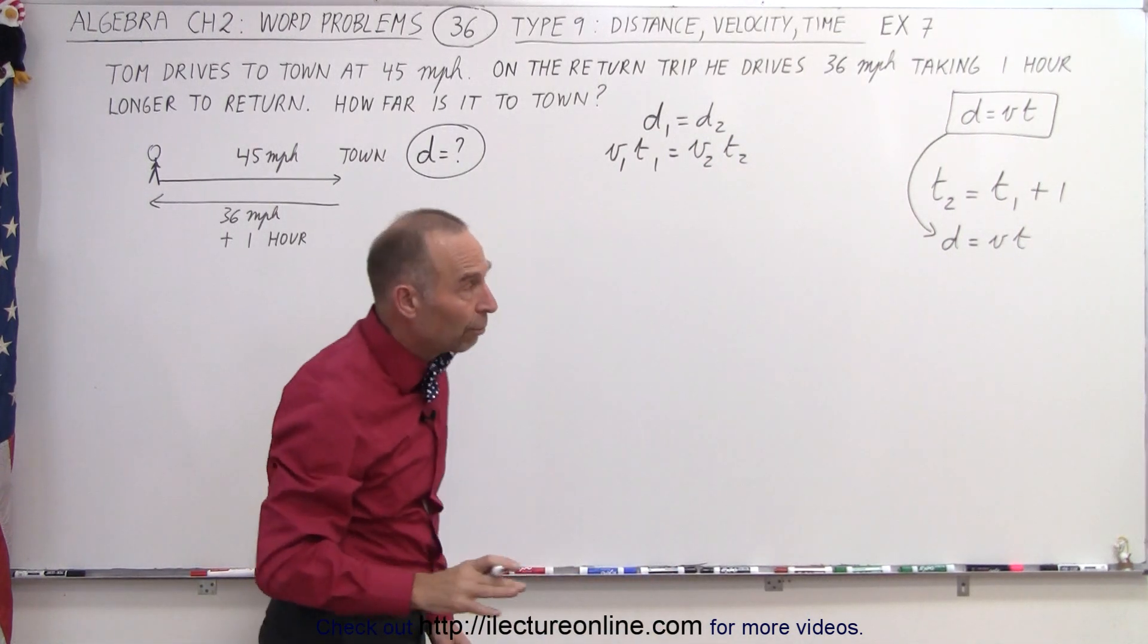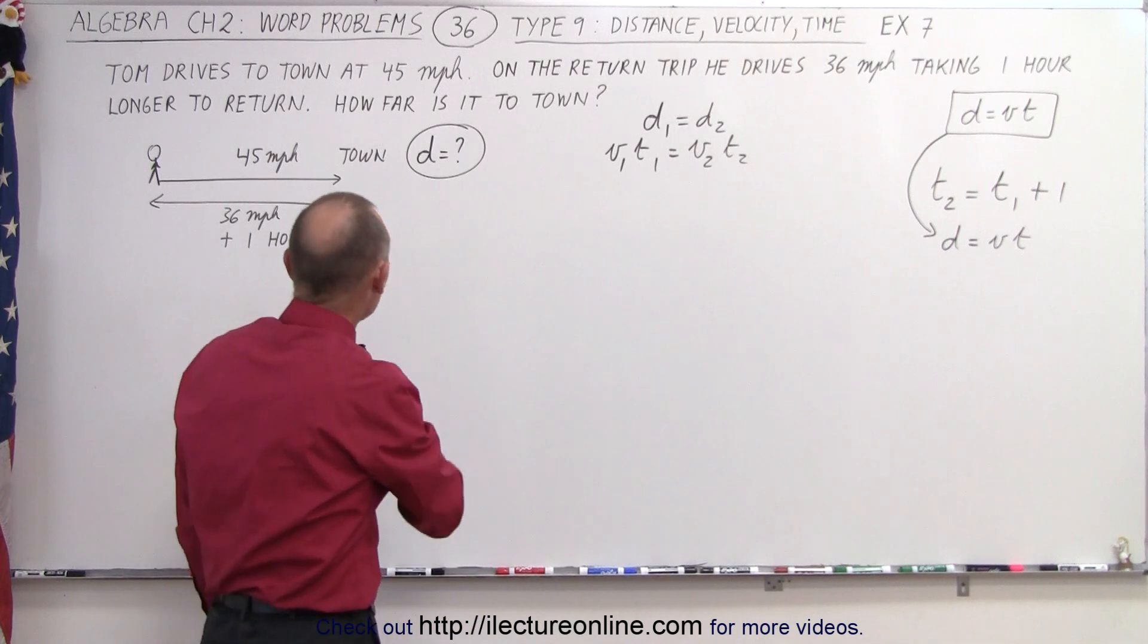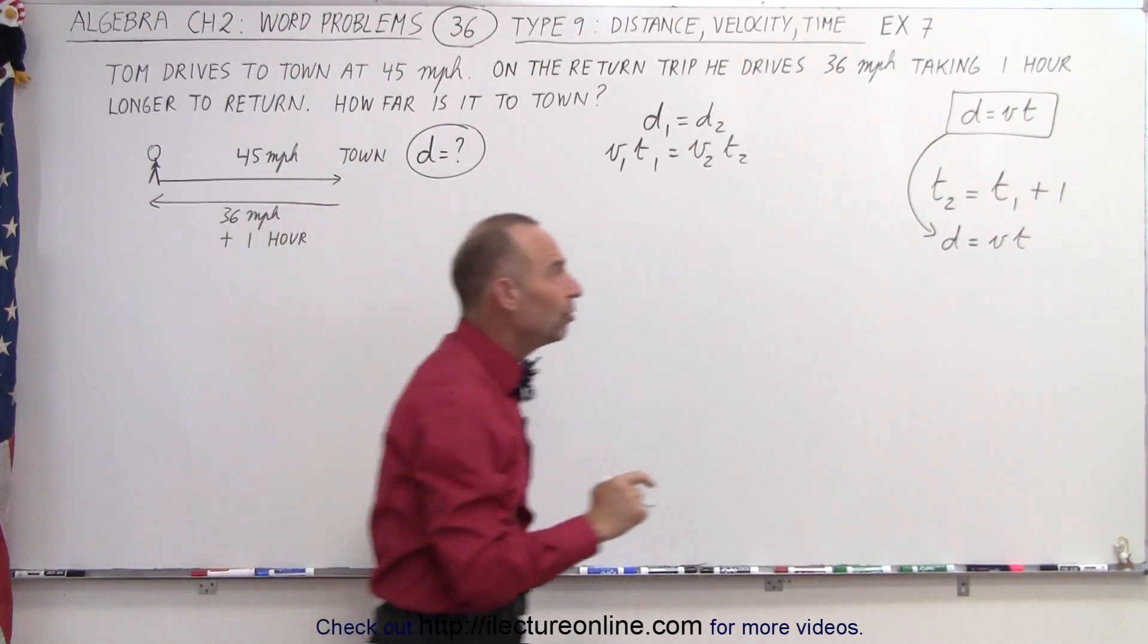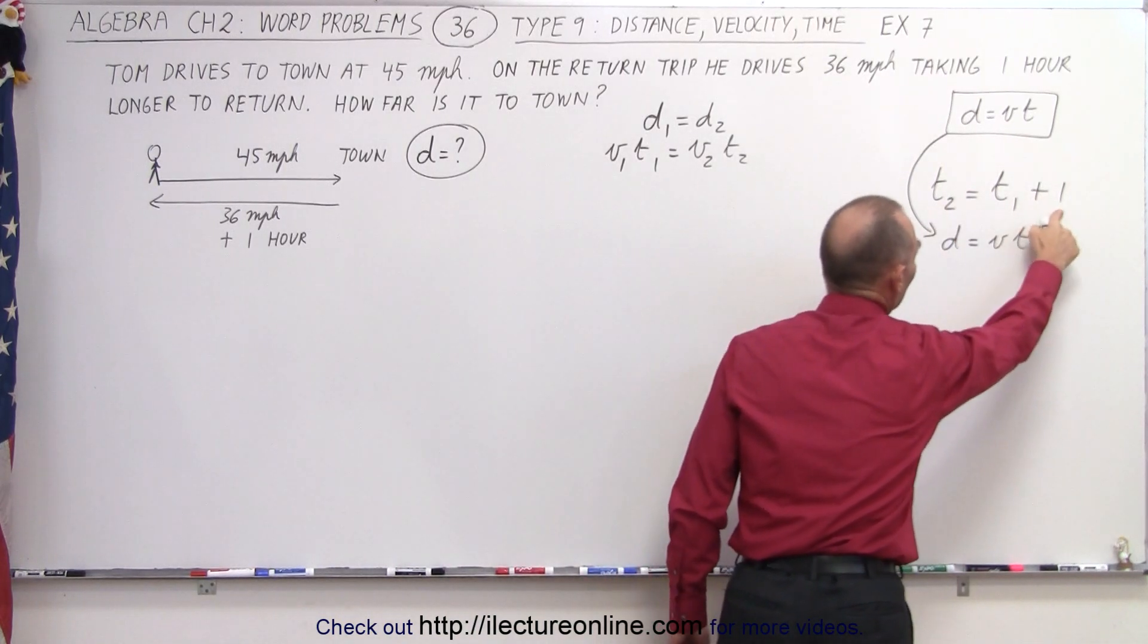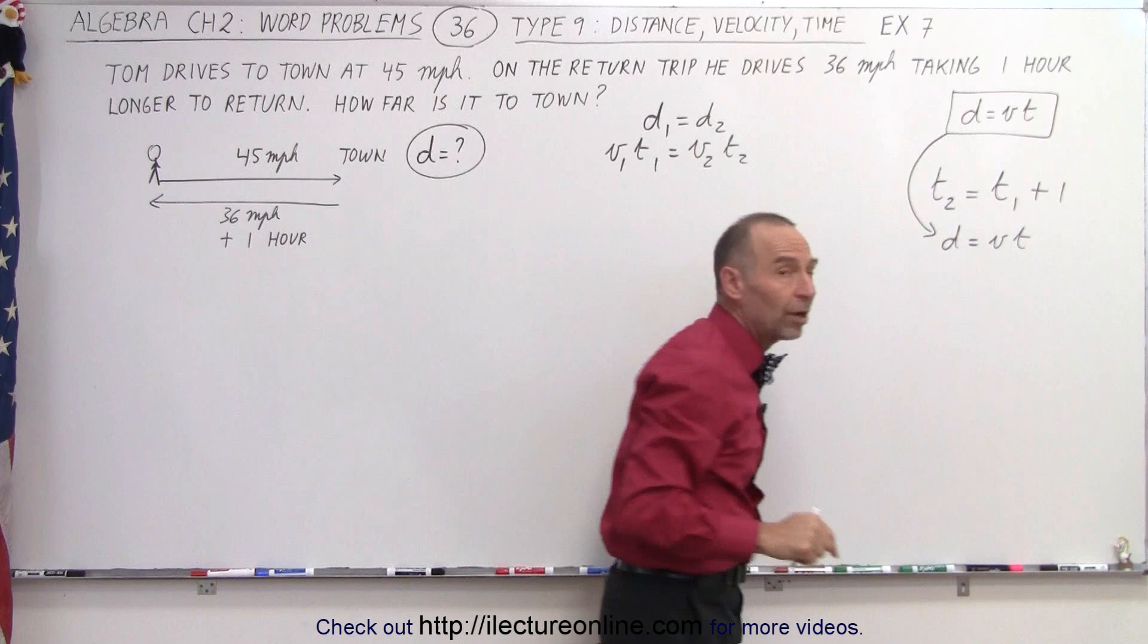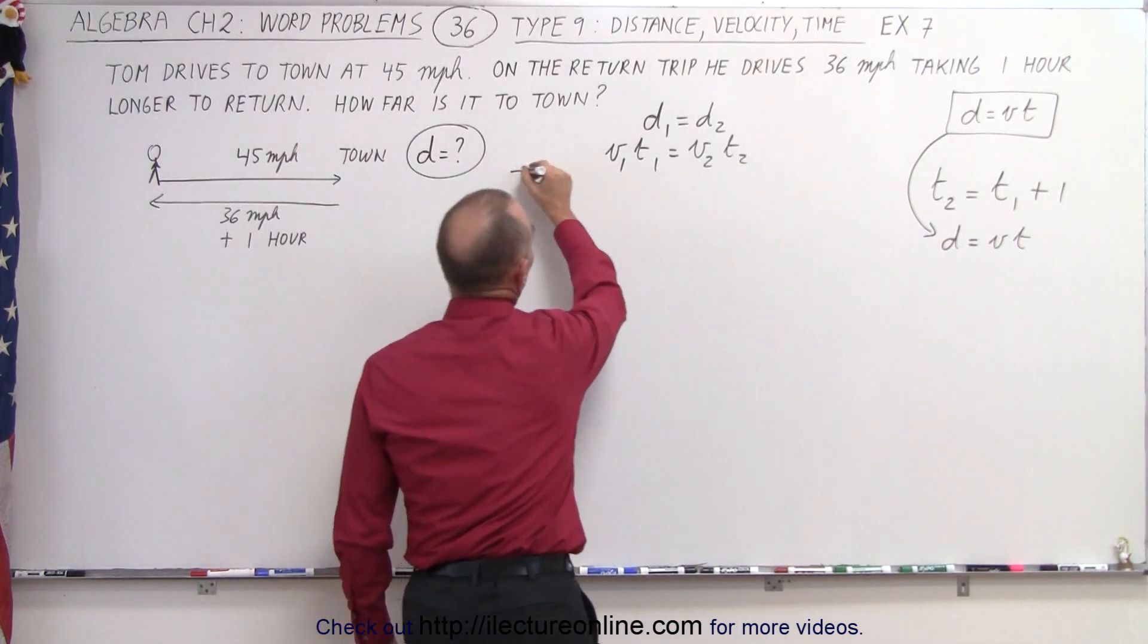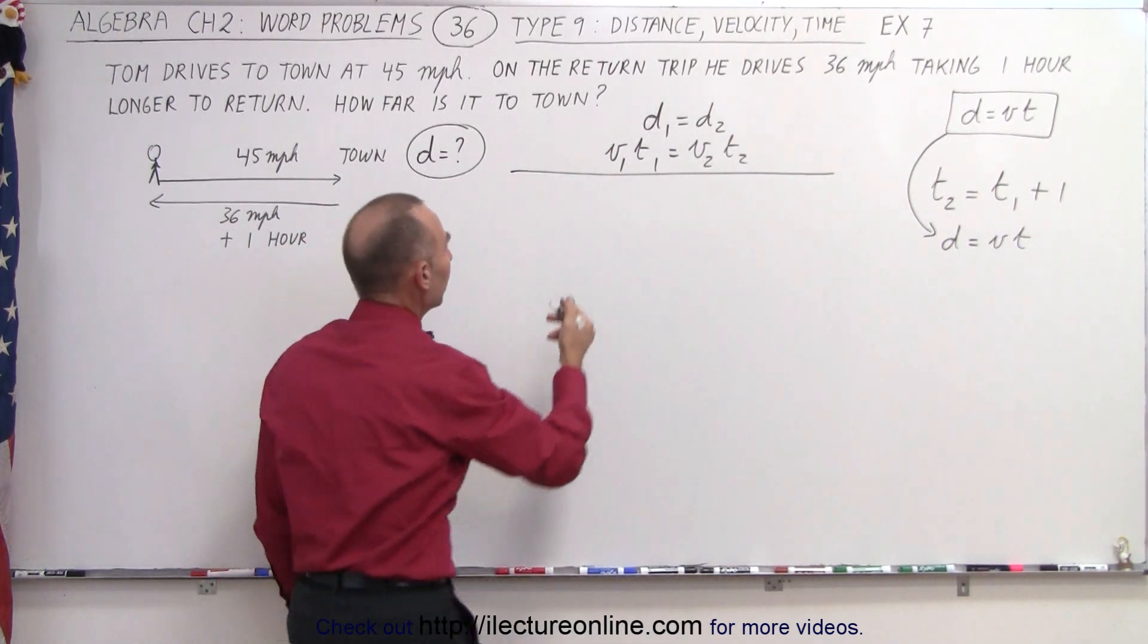So that was one approach, but we can also say that we do not know the time. We don't know how long it took to get to town and how long it took to get back, but we do know the difference between them. We know that the time to get back took one hour longer than the time to go to town, so we can use that as a starting equation. Instead of using the method we used in the previous video, we're going to use a different method for the very same problem.